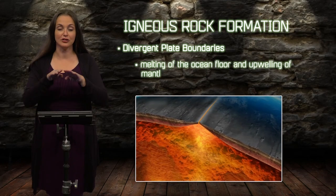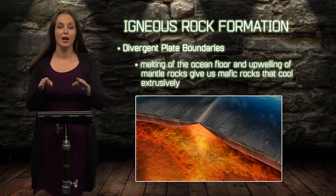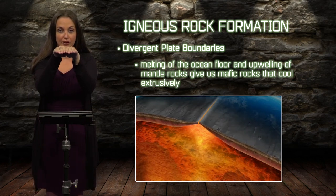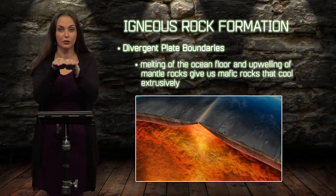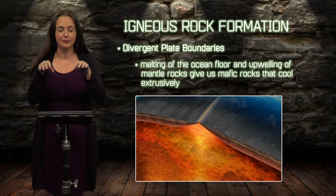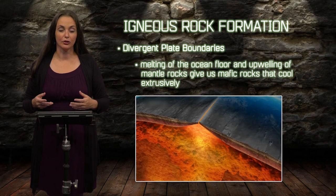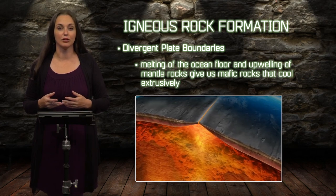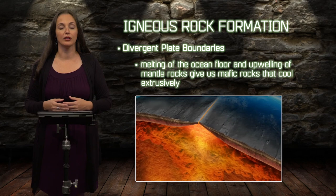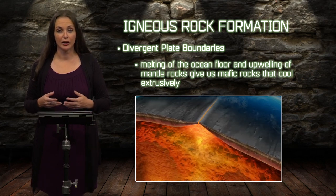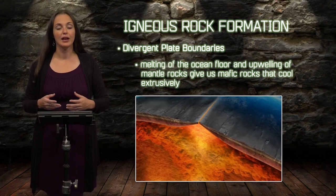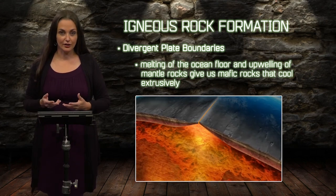Igneous rock activity is mainly going to take place at tectonic plate boundaries, so let's go through those boundaries, remind ourselves about what's going on at them, and then go from there. The first boundary we're going to discuss in the context of igneous rock formation is divergent plate boundaries. To diverge is to have two things move apart, so at a divergent plate boundary you have two plates that were together — at some point one continuous plate — and then they moved apart.